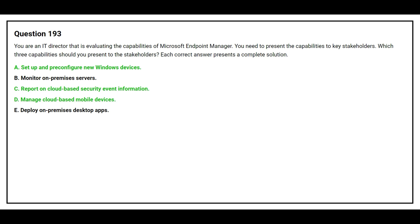The correct answers are Option A: set up and pre-configure new Windows devices; Option C: report on cloud-based security event information; and Option D: manage cloud-based mobile devices.